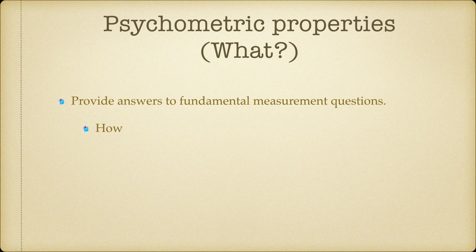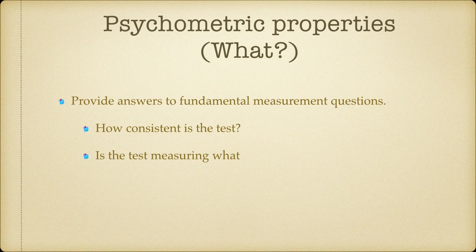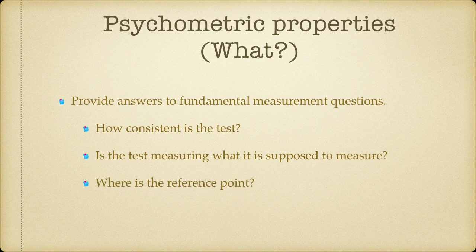They tell us how consistent the test is in measuring what it is measuring. They also tell us if the test is really measuring what it is supposed to be measuring. And finally, they tell us what number can be called a low, medium, or high score on a given test.